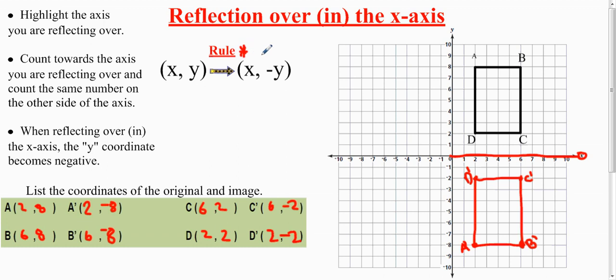You have to remember the rule, though. You have to actually study it. So when you're reflecting over the x-axis, the x stays the same, and the y changes its sign.